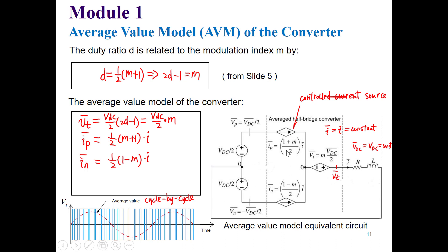The average value model consists of two current sources. The positive current source IP equals (1 + M)/2 times I, and (1 − M)/2 times I for the lower one. We also have a controlled voltage source whose value is M times Vdc over 2. We only need I, the load current, and M to build the average value model.